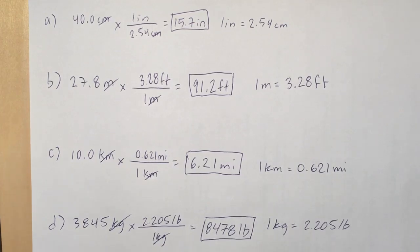Lastly, D: 3,845 kilograms. We're going to use that conversion factor found on the right: one kilogram equals 2.205 pounds. So we're going to put 2.205 pounds on the top and one kilogram on the bottom because we want to cancel that kilogram unit out.